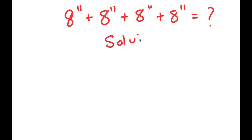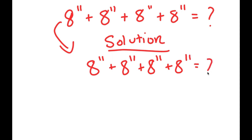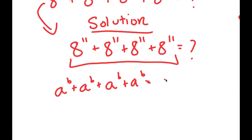For my solution, I'm going to rewrite my problem over here. So I have 8 to the power of 11 plus 8 to the power of 11 plus 8 to the power of 11 plus 8 to the power of 11. Notice how all of these terms are the same — all the same terms adding with each other. If I have something in the form 8 to the power of B plus 8 to the power of B plus 8 to the power of B plus 8 to the power of B, I can simply factor out 8 to the power of B.